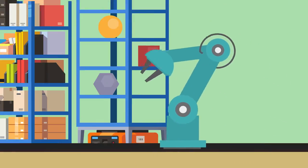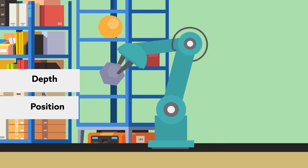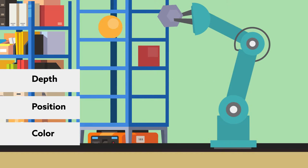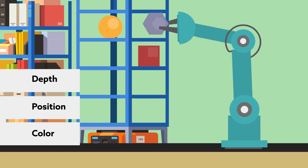That data can be translated into measures of depth, position, and color to help a robot, in this case a mobile robotic arm, get its bearings.